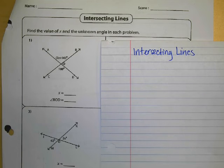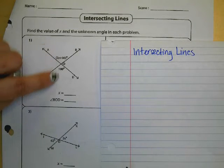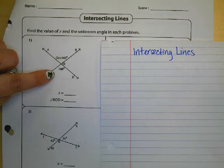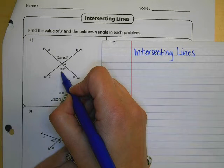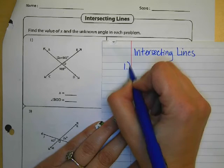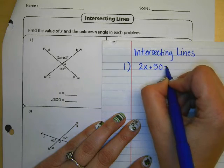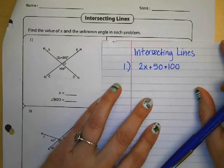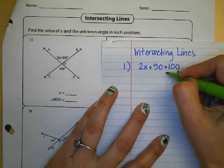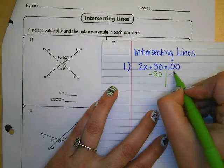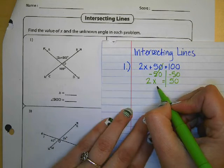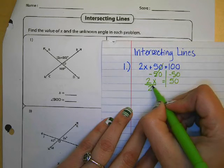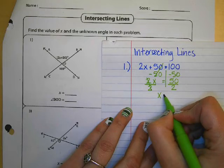Now on the third page, we are looking at intersecting lines and vertical angles. On number one, we have a set of vertical angles because they're across from each other, so we know that vertical angles are equal. When we start to solve this, we know that 2x plus 50 has to be equal to 100. That is our equation. We're going to subtract 50 from both sides, leaving 2x equal to 50. Then we divide by 2, and x is equal to 25.